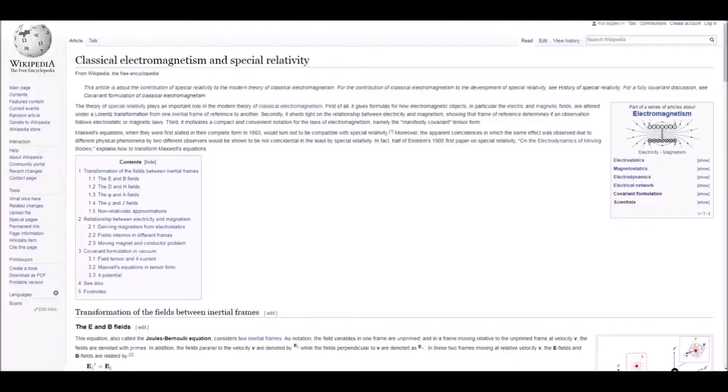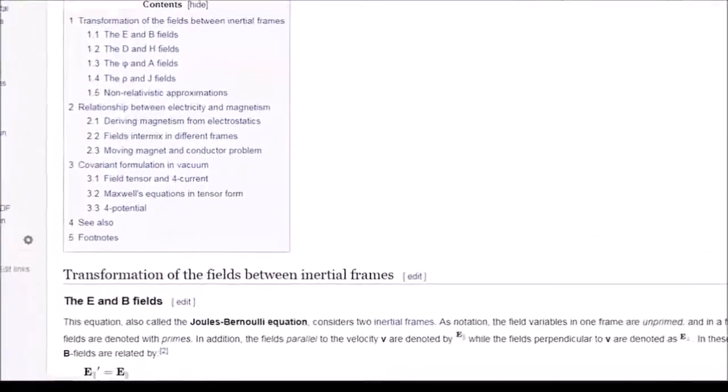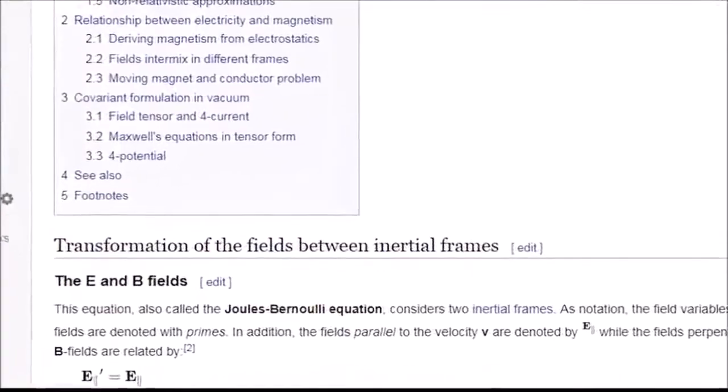We still use Maxwell's equations today because they are correct, but when the relativist uses them, he must invariably inject the transform equations in order to make Maxwell's two absolute reactions into Einstein's one relative reaction.